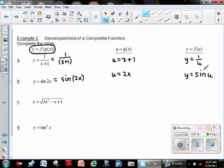We've got the square root of 3x squared minus x plus 1. That entire quantity underneath the radical is going to act as your u. And if that's the case, then the y function would just be the square root of all of that.